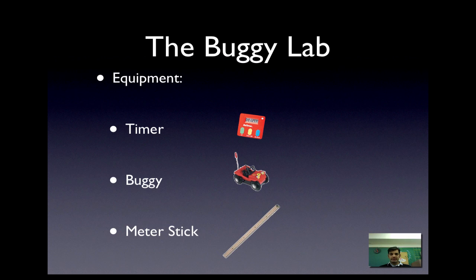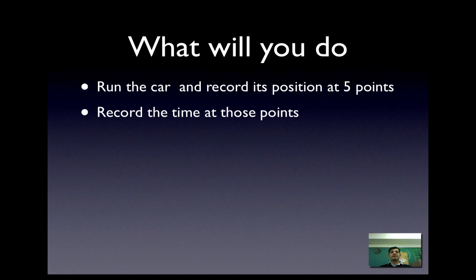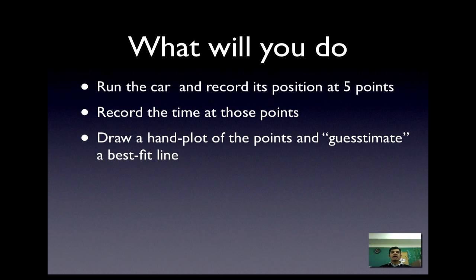What are you going to do with this equipment? You're going to turn on this buggy and it's going to roll on the ground and you're going to be measuring its position. You're going to run the car and use the ruler and timer to record its position at five points. You're going to record the time that the buggy crosses those points. Then you're going to draw a hand plot of the points and guesstimate a best fit line, and calculate the slope and find the y-intercept of that line.